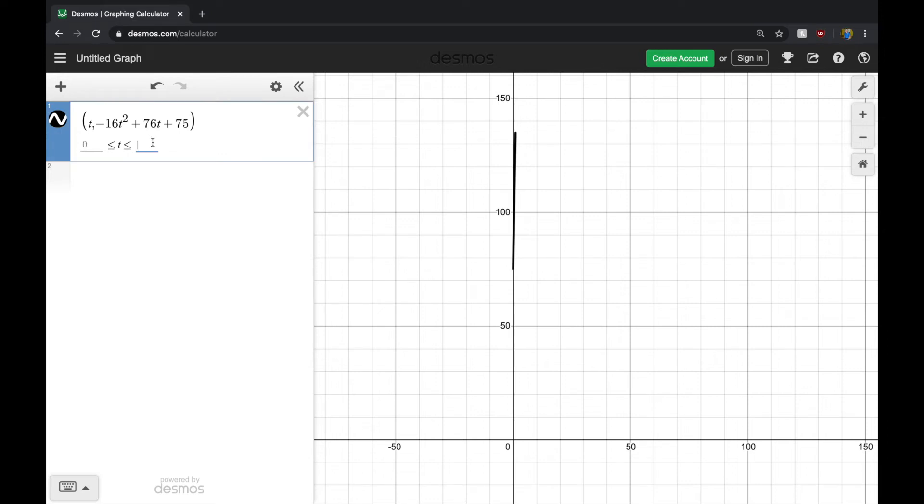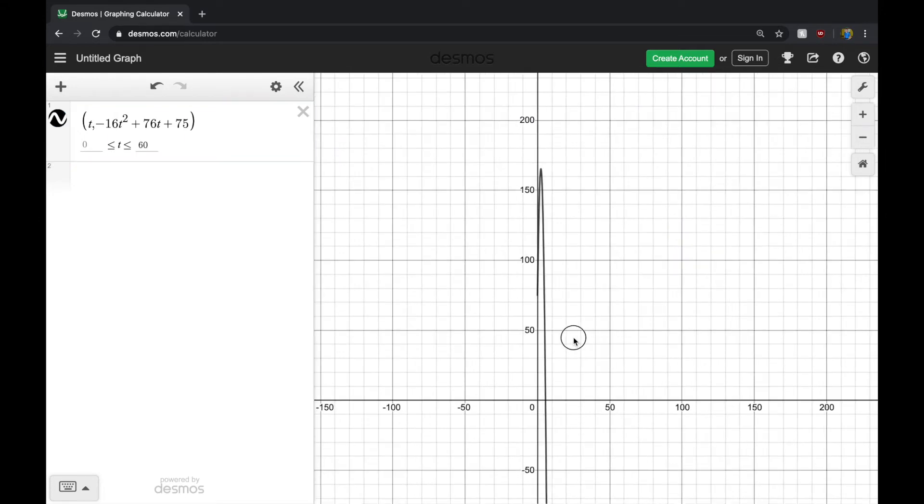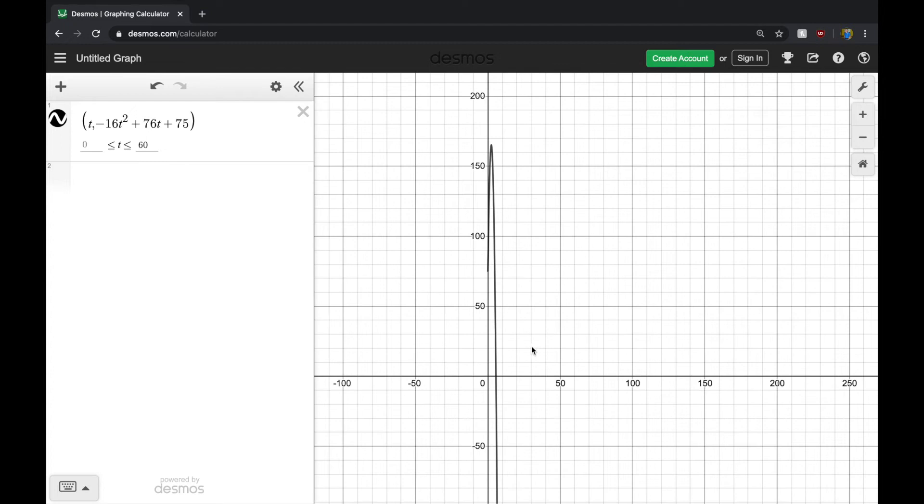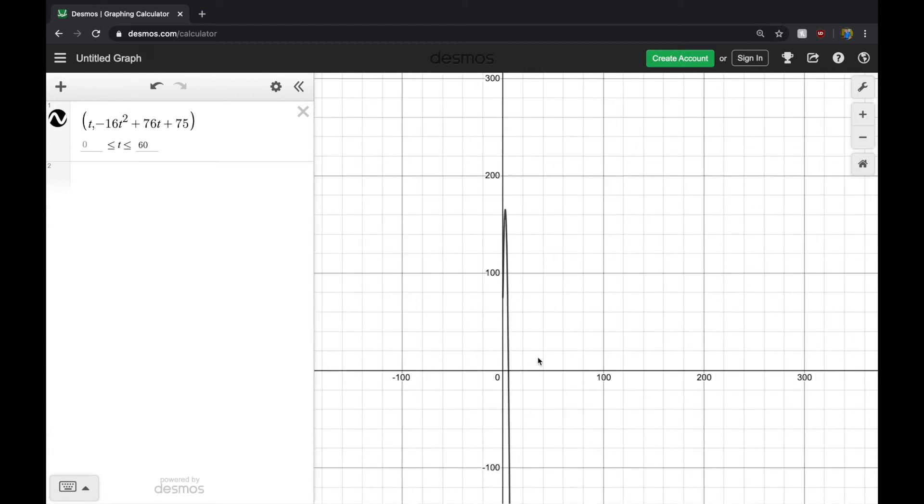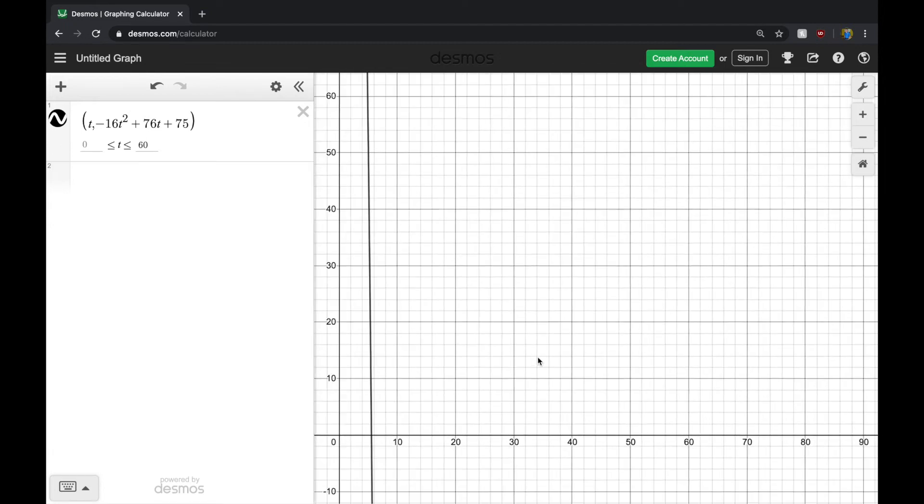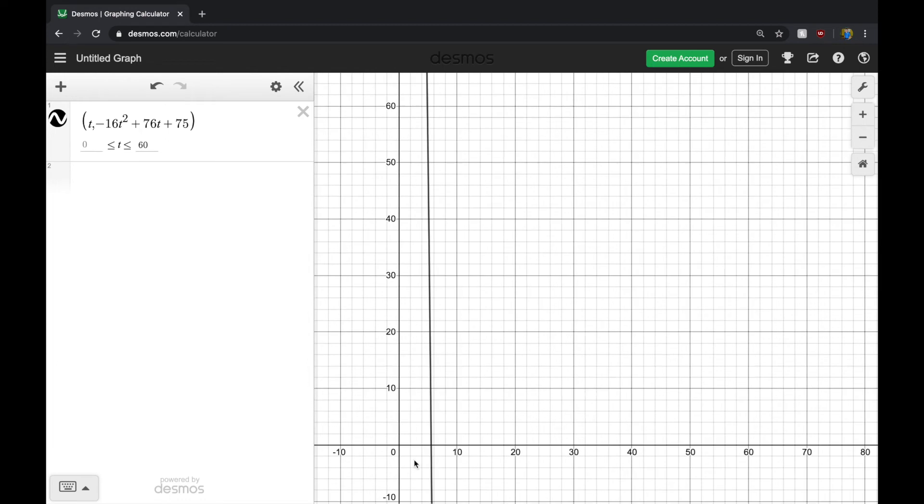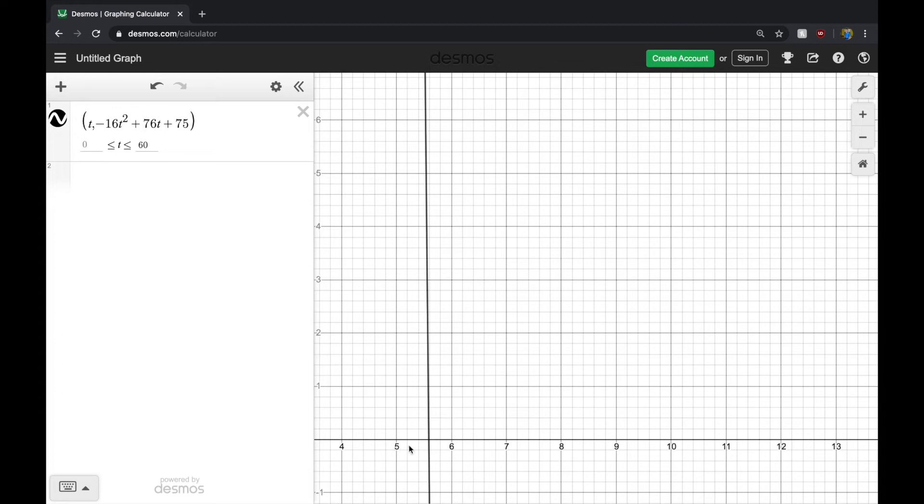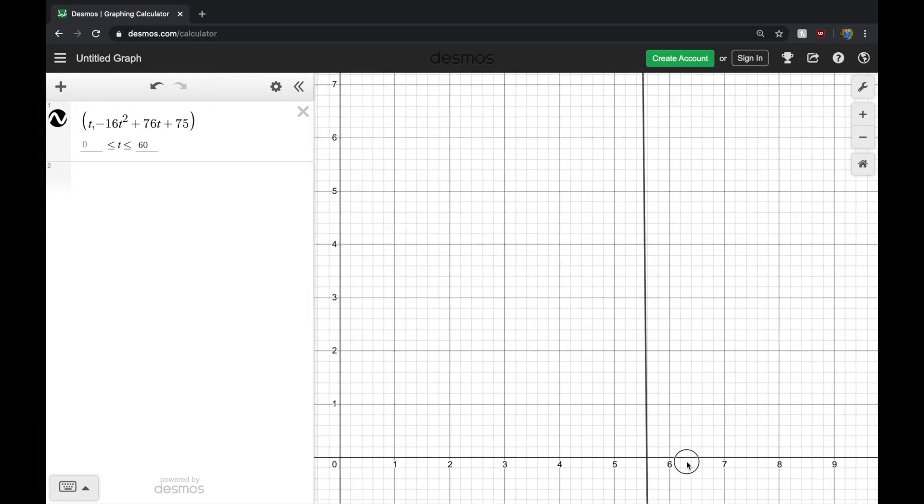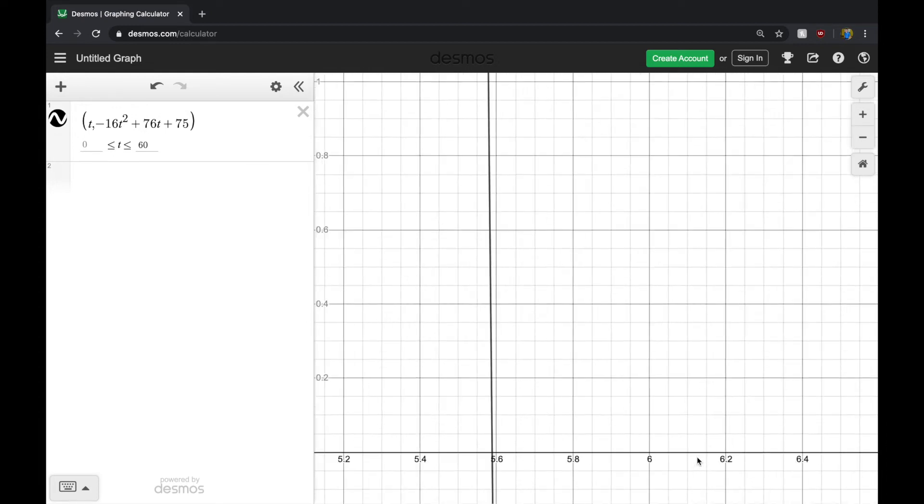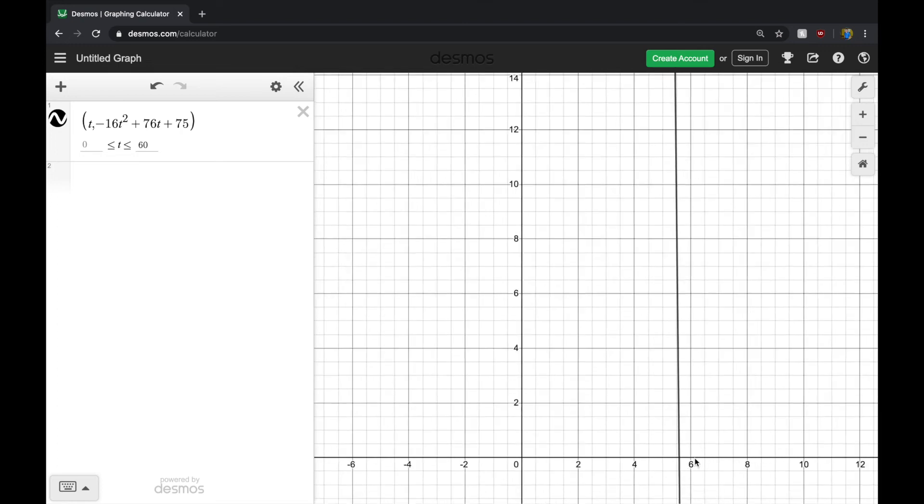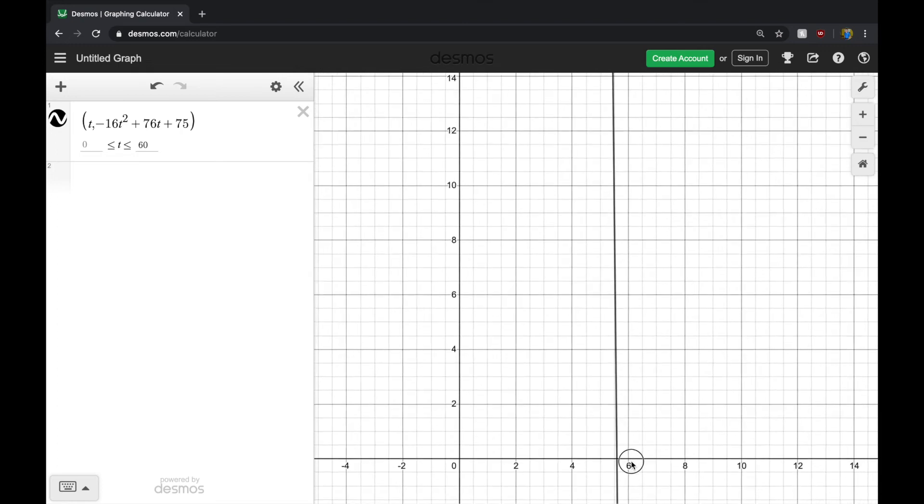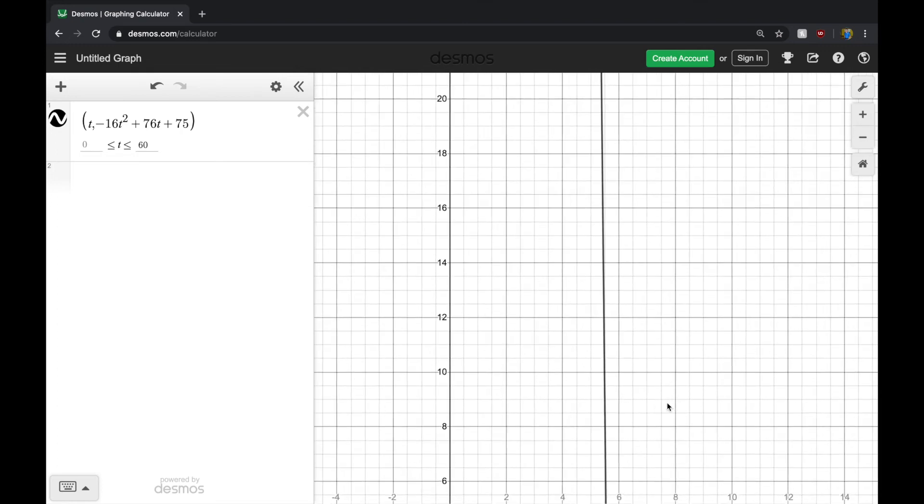Let's say over about a minute. So this is 60 seconds, because T is going to be representing seconds. And so you see that it's actually going to fall to the water's surface after about five and a half seconds.